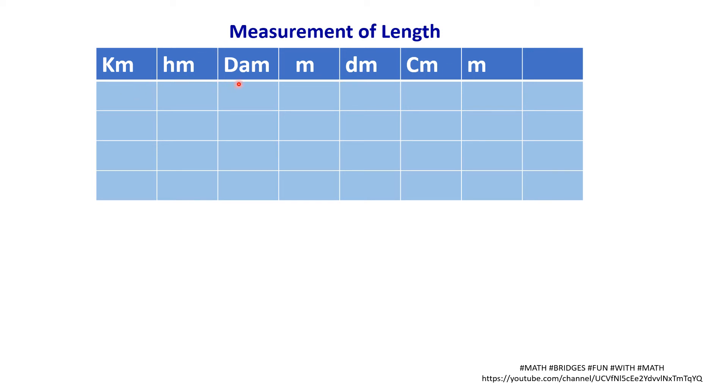Kilometer, hectometer, decameter, meter, decimeter, centimeter and meter. So now let's convert 6 kilometers into meters. You can see here, kilometer here and meter here. Means from bigger units to smaller units, we are converting.